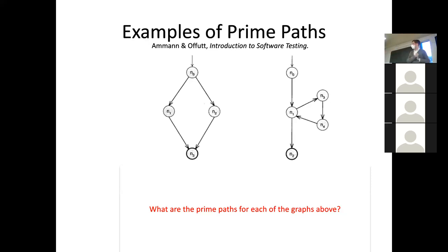Give me another simple path. N3, N4, N1, N2 — yes, that's exactly right. What about N1, N3, N4, N1, N3? Is that a simple path? No — because it has internal repetition that's not just the start and finish being the same. So we're getting a feel for what some simple paths might be. They don't have to start at the start or end at the end.